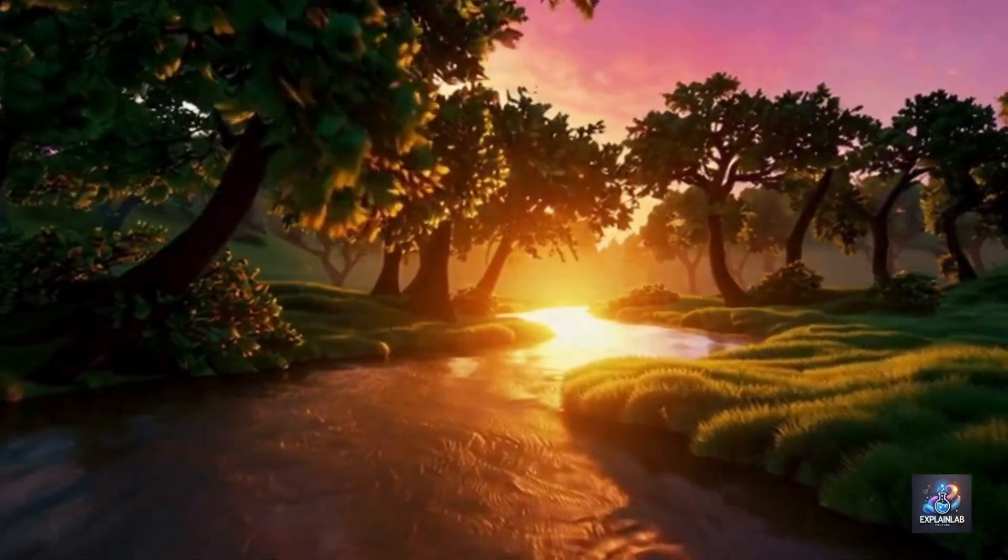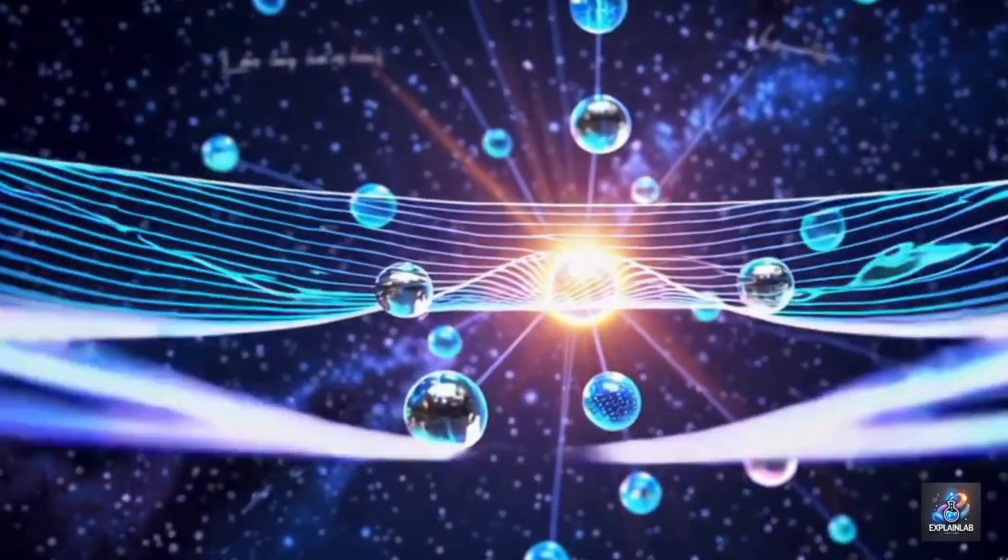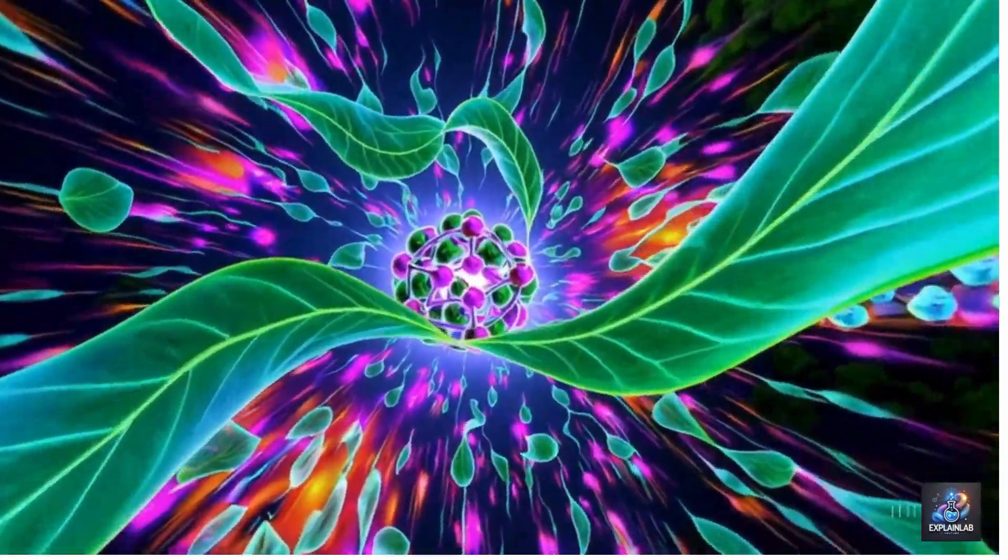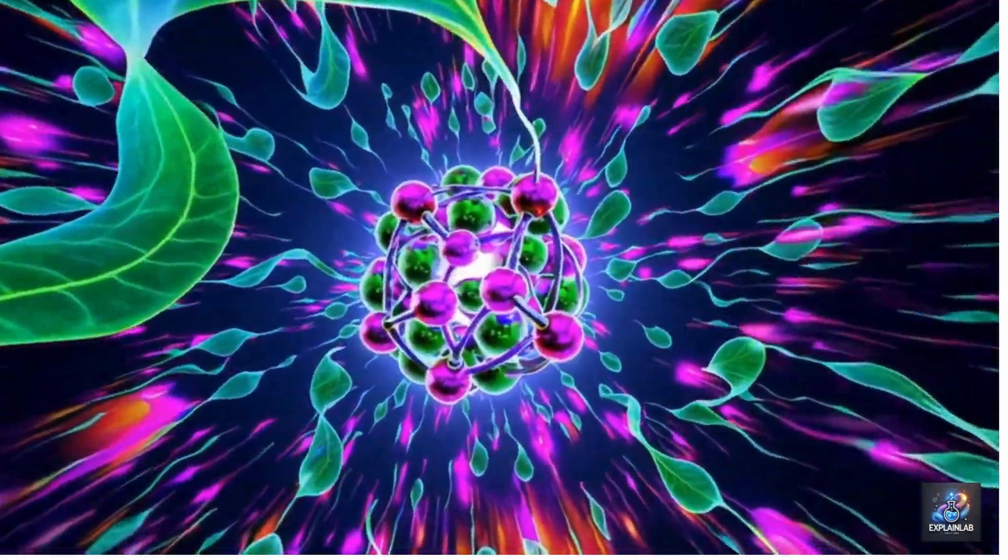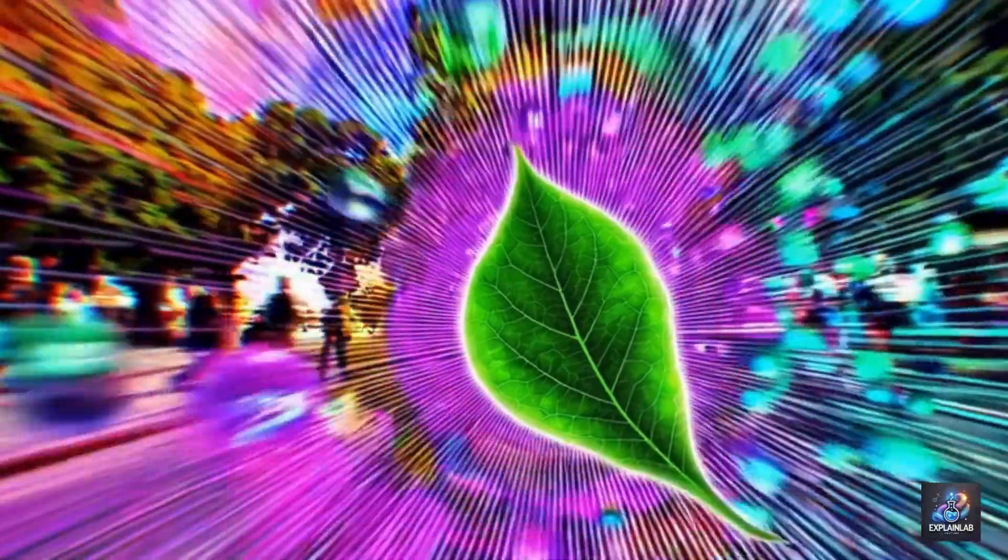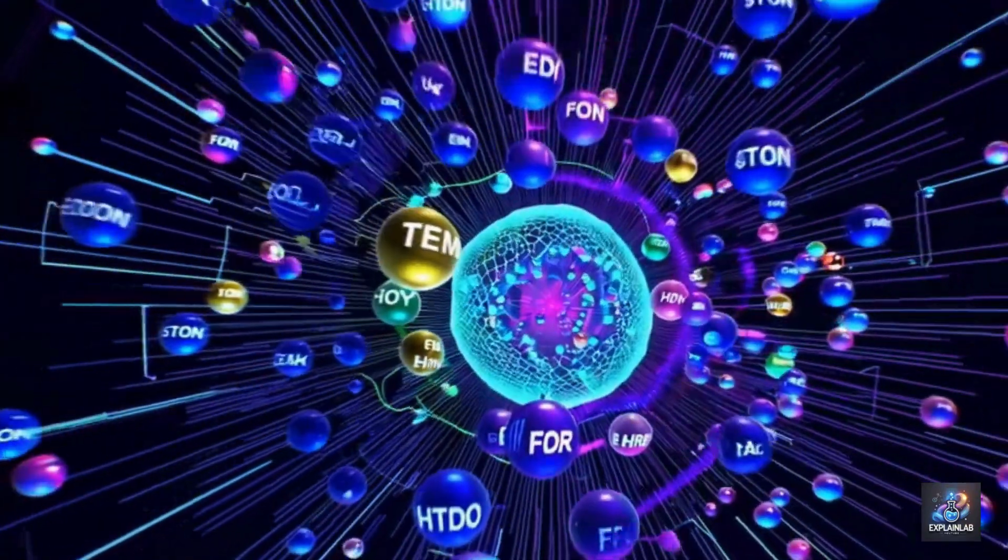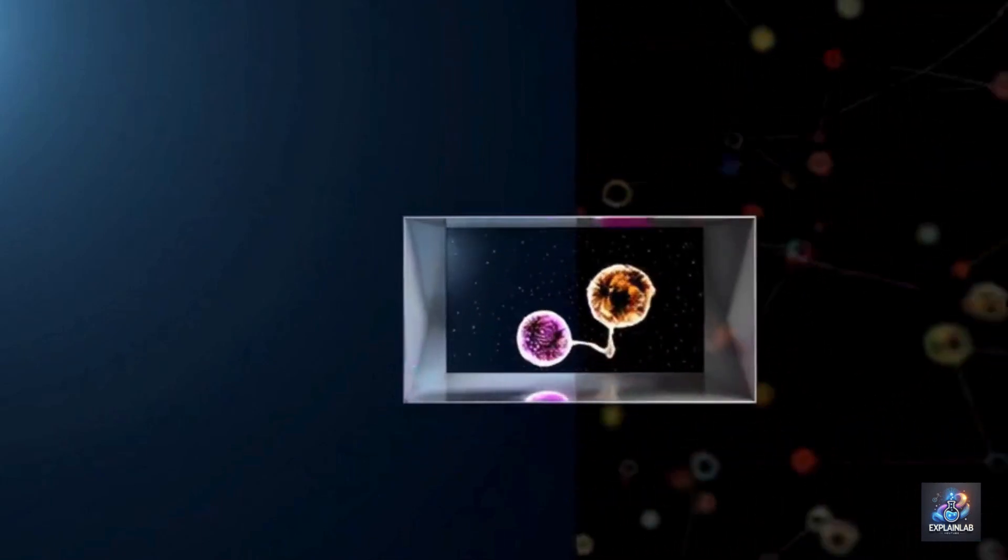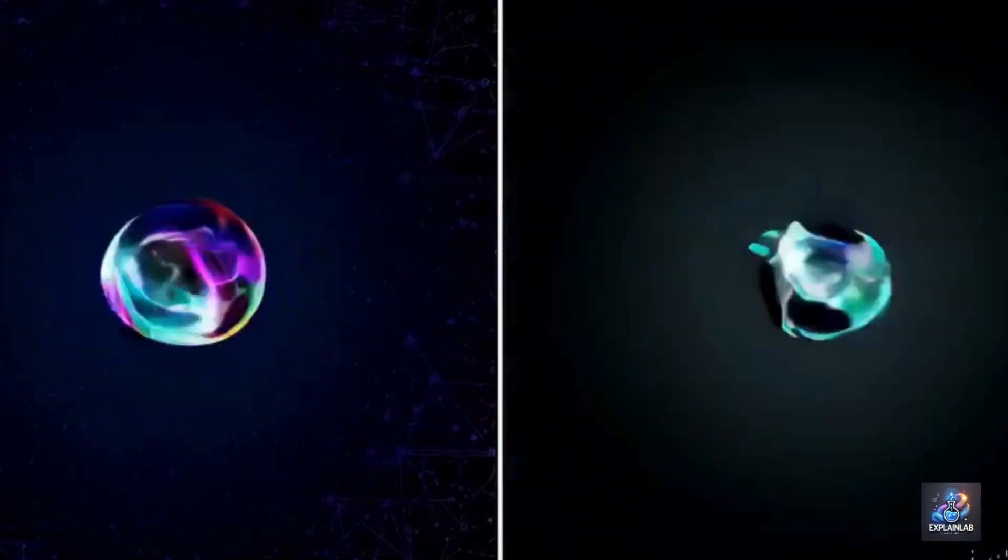Superposition. That's where things can exist in multiple states at once. So instead of just two options, a qubit has a whole spectrum of possibilities. Exactly. It's like having a coin that can be heads, tails, or spinning in the air, undecided. And this ability to be in multiple states simultaneously is what gives quantum computers their immense computational power.